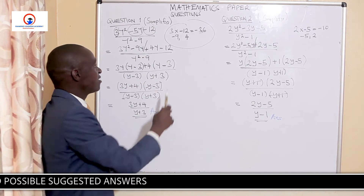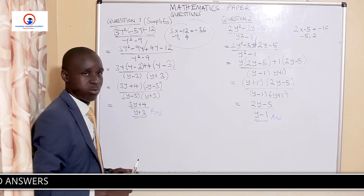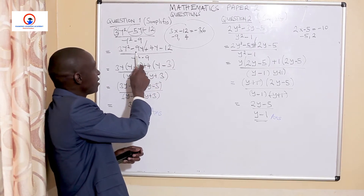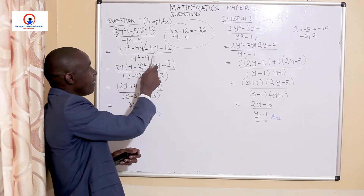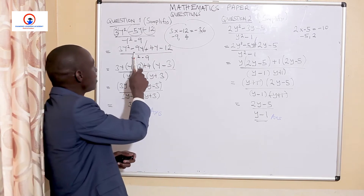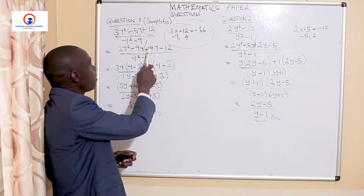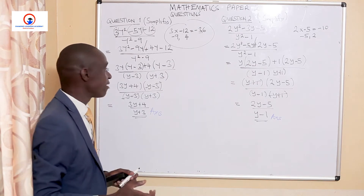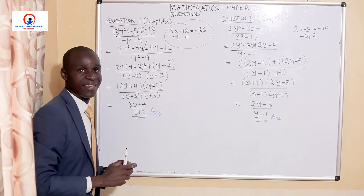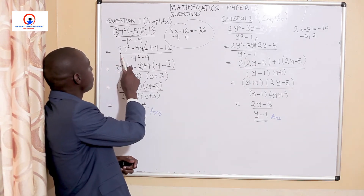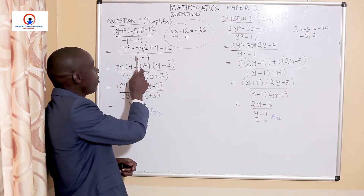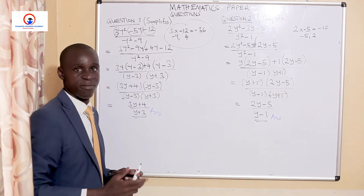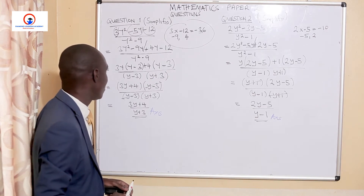I have picked negative 9 and positive 4. Negative 9 plus positive 4 gives us the negative 5 that we are looking for in the equation. So the expression has now grown. It has become 3y squared minus 9y plus 4y minus 12. Things are beginning to get simplified now.